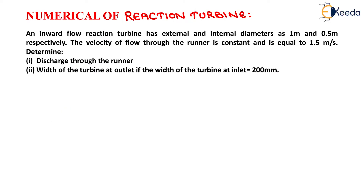The question is: an inward flow reaction turbine has external and internal diameter as 1 meter and 0.5 meter respectively. The velocity of flow through the runner is constant and equals 1.5 meter per second. We have to determine the discharge through the runner, and the width of the turbine at outlet if the width at inlet is 200 mm.